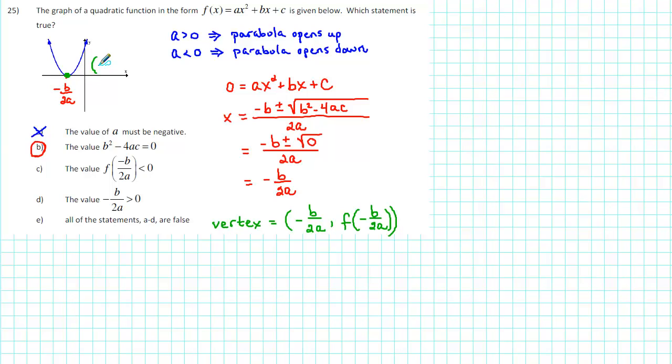Since the vertex is to the left of the y-axis, we know that the x-coordinate is negative. Since the vertex lies on the x-axis, we know that the y-value is 0.